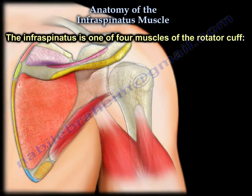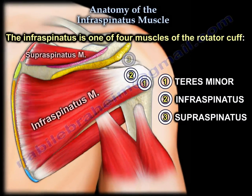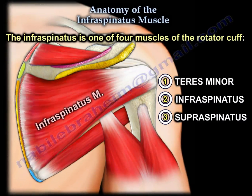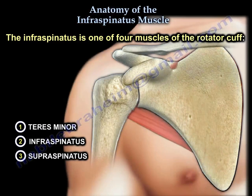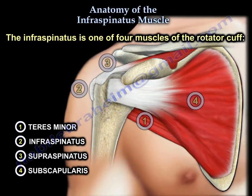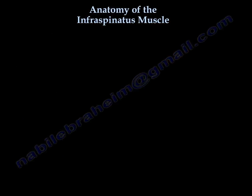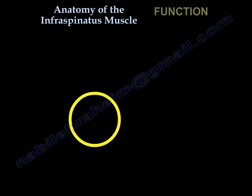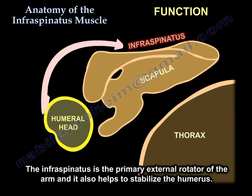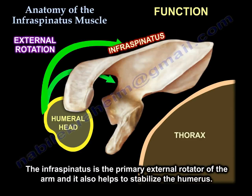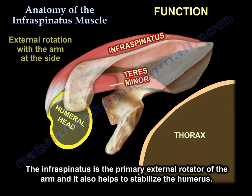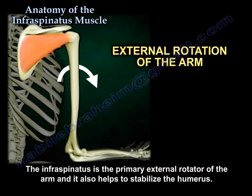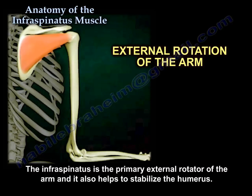It is also one of the four rotator cuff muscles. The action of the muscle is external rotation of the shoulder with the arm to the side — the muscle is pulling the arm towards the back, which means external rotation. The infraspinatus is really a major external rotator of the shoulder. It also contributes to the humeral head depression action of the cuff.